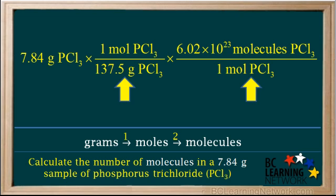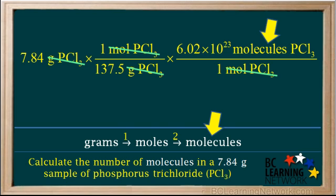And now we have all the conversion factors we need. So we'll cancel out the unit grams of PCl3 and the unit moles of PCl3. And we're left with the unit molecules of PCl3, which is what we wanted. So here, we write molecules of PCl3 as the unit for our answer.